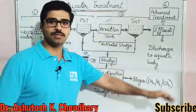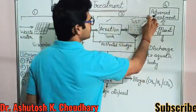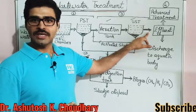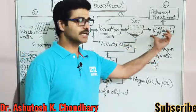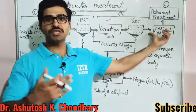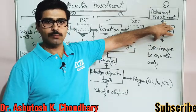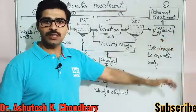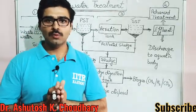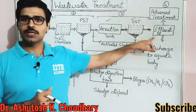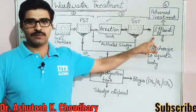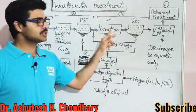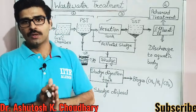After secondary treatment, the water we get is called effluent — the water we are going to discharge. Up to this stage, there is more than 90 percent removal of BOD, and total suspended solids are also removed by more than 90 percent. Some particles that are dissolved get oxidized by bacteria through this process.